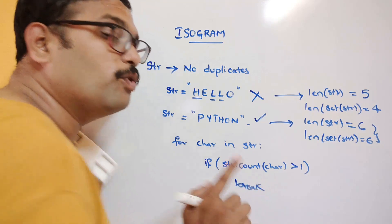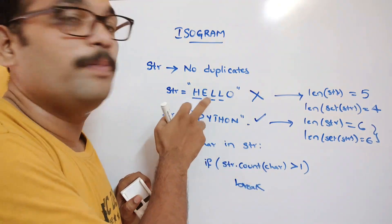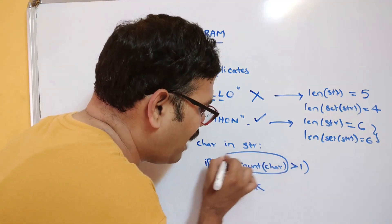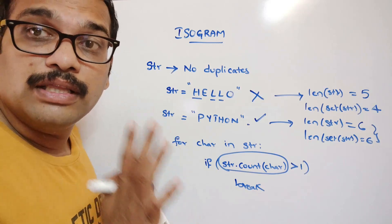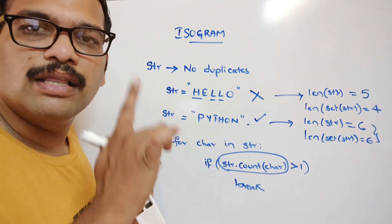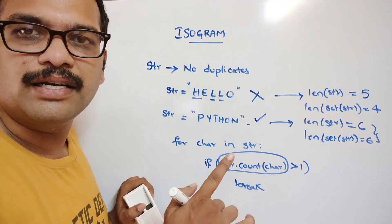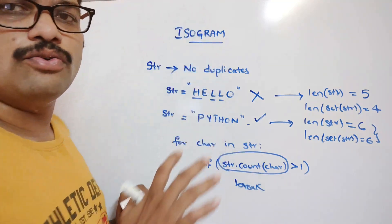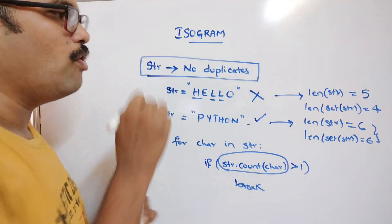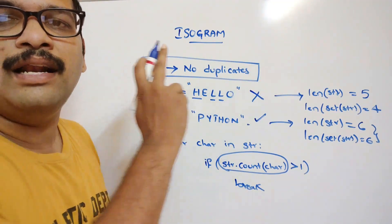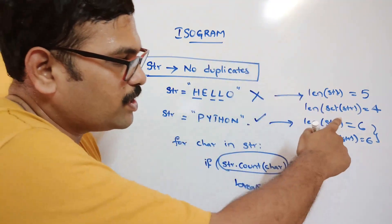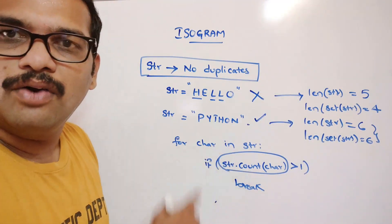The count of each character should be only one, since there should be no duplicates. If there are any duplicates, the count method will return a value greater than one. If the count is greater than one, we break the loop because a duplicate exists, meaning the string is not an isogram. We can find the isogram using the set function or the count method.